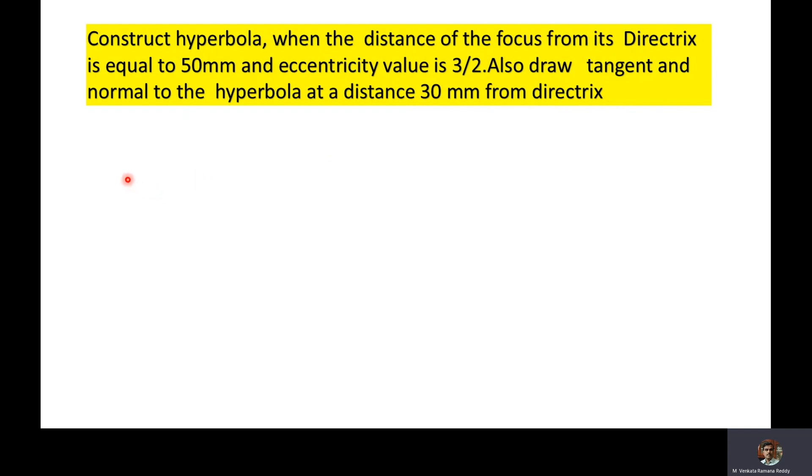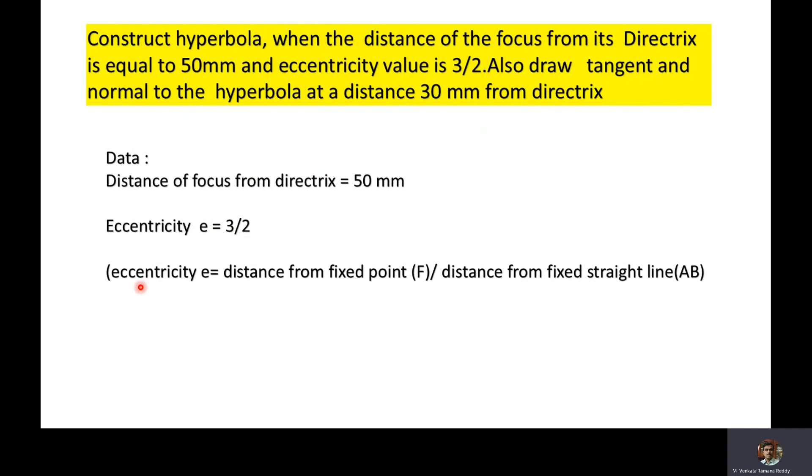Now we will write the data from the problem. Distance of focus from directrix is equal to 50 mm. Eccentricity value is equal to 3 by 2. Eccentricity is equal to E, which is distance from fixed point F by distance from fixed straight line AB. Here eccentricity is greater than 1, so the name of the curve is a hyperbola.